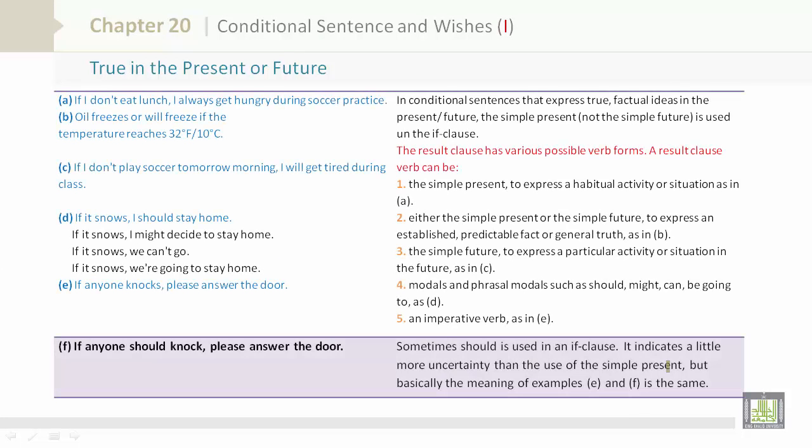True in the present or future. Let's take a look at this chart. A: If I don't eat lunch, I always get hungry during soccer practice. B: Oil freezes or will freeze if the temperature reaches 32 degrees Fahrenheit or 0 degrees Celsius. In conditional sentences that express true factual ideas in the present or future, the simple present, not the simple future, is used in the if clause. The result clause has various possible verb forms.